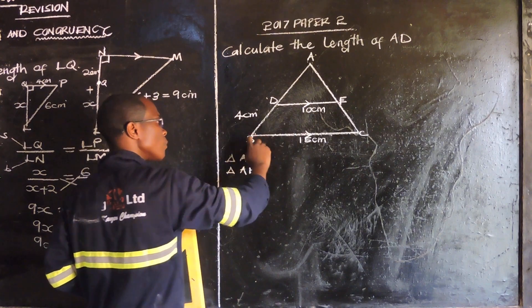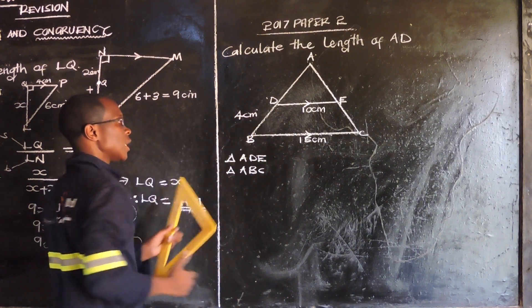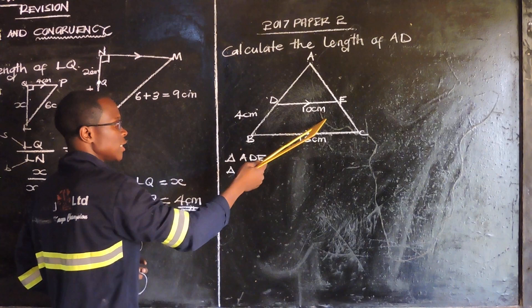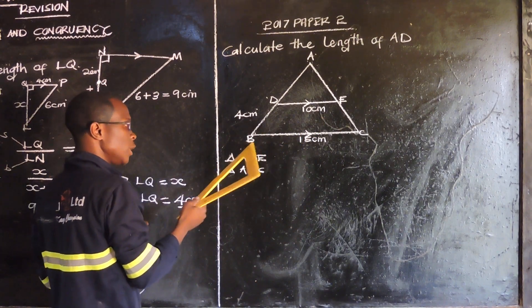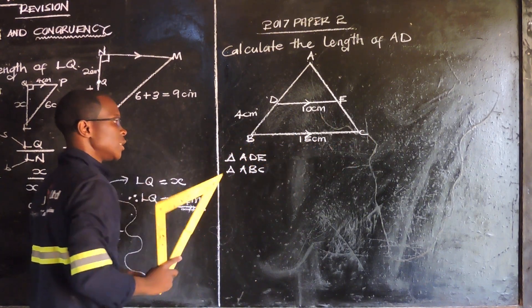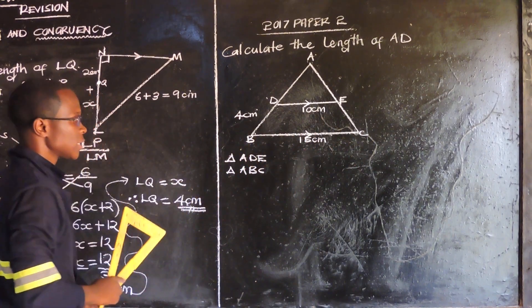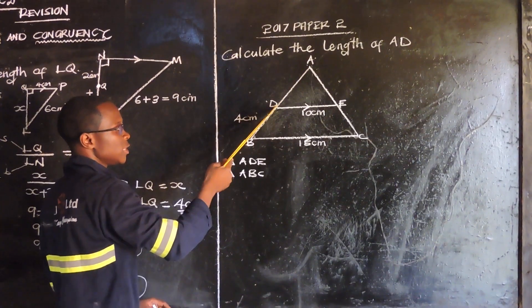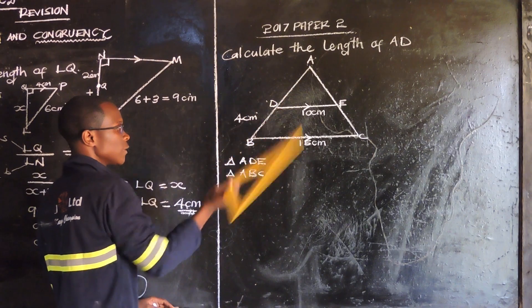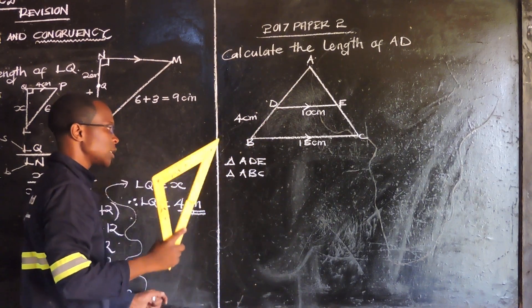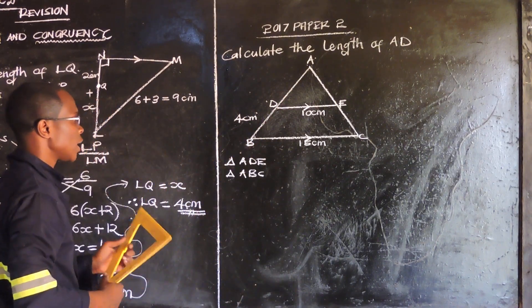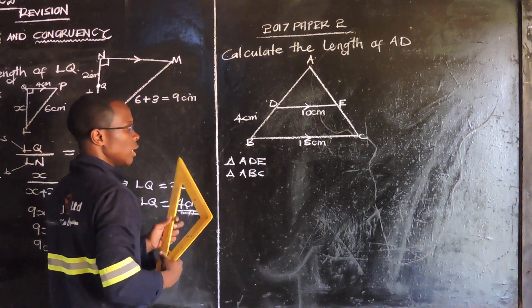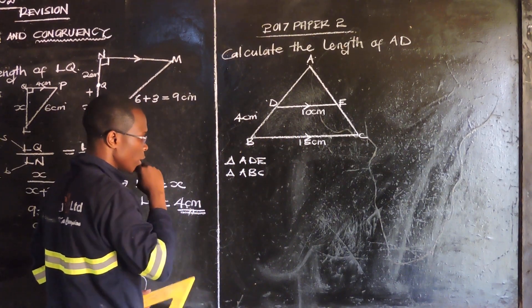From B to D it's 4 centimeters, from D to E it's 10 centimeters, and from B to C it's 15 centimeters. We need to calculate the distance AD. The best thing you can do is come up with a sketch of two triangles — a small one and a big one.